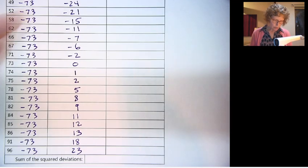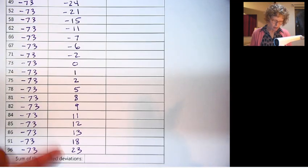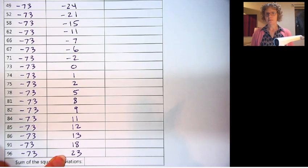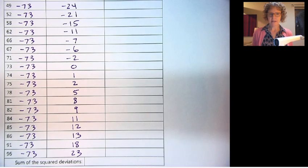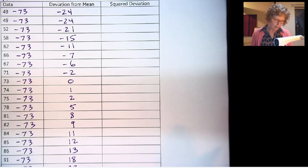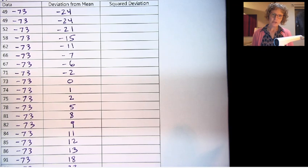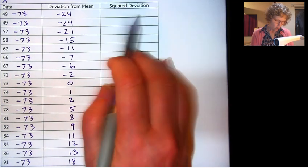Now if we were to add all these deviations up, we'd have a problem. We would actually end up with 0, because the average is the average. If we subtract the average from everything, we're going to get 0. So that doesn't work for a measure. So what we're actually going to do is square all of these numbers.